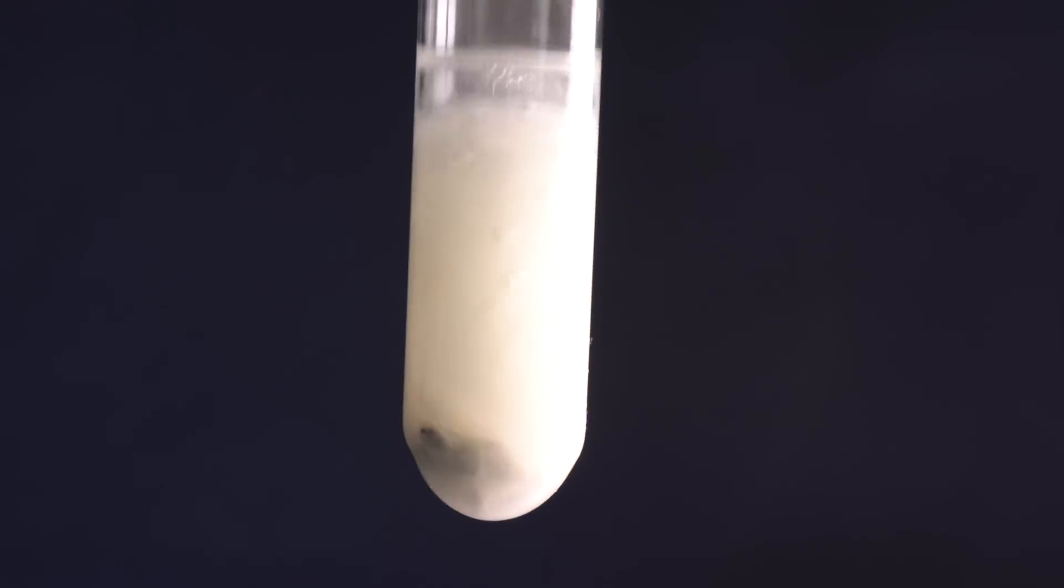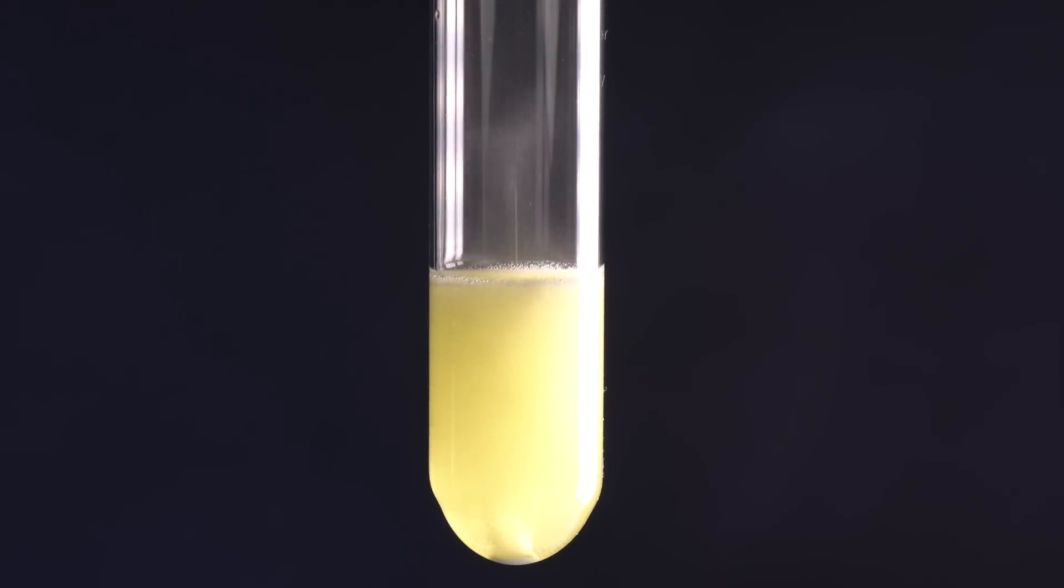If a piece of samarium is thrown into hydrochloric acid, it will start actively dissolving in it, forming a samarium chloride of yellow color.